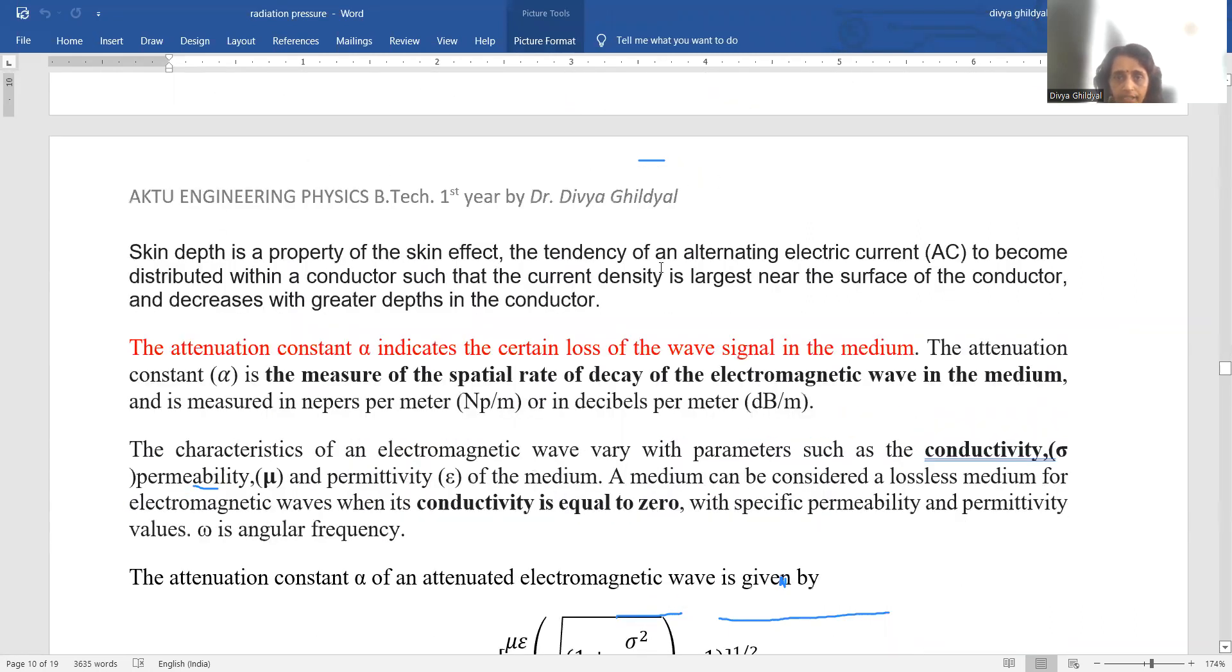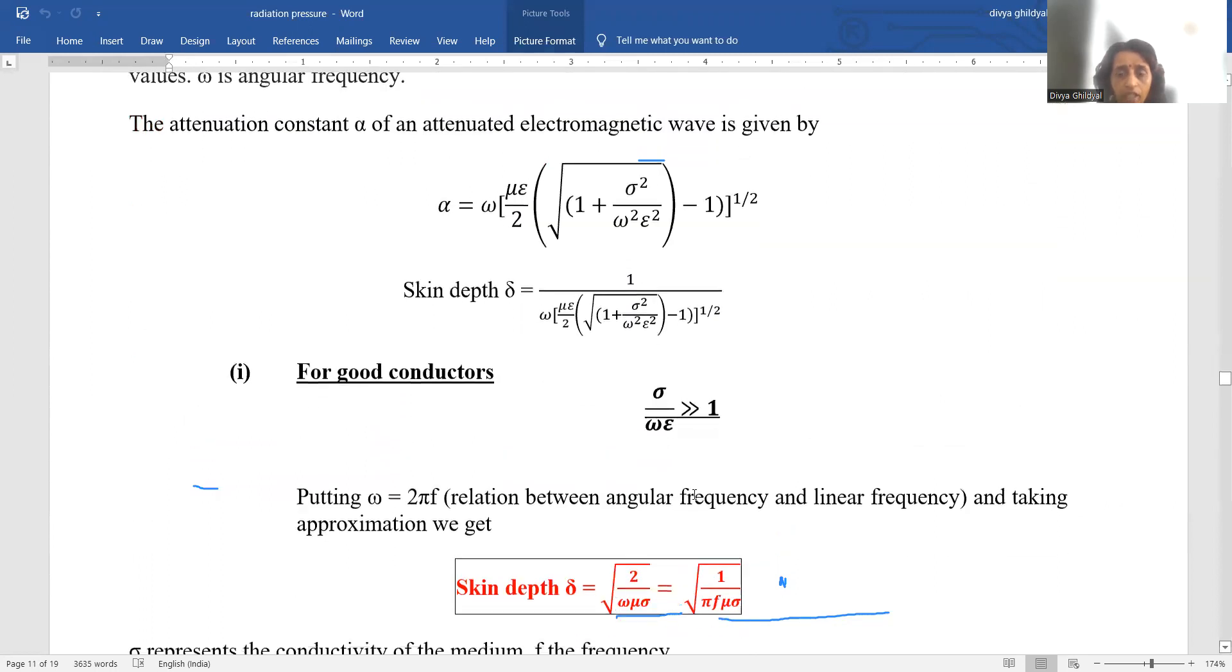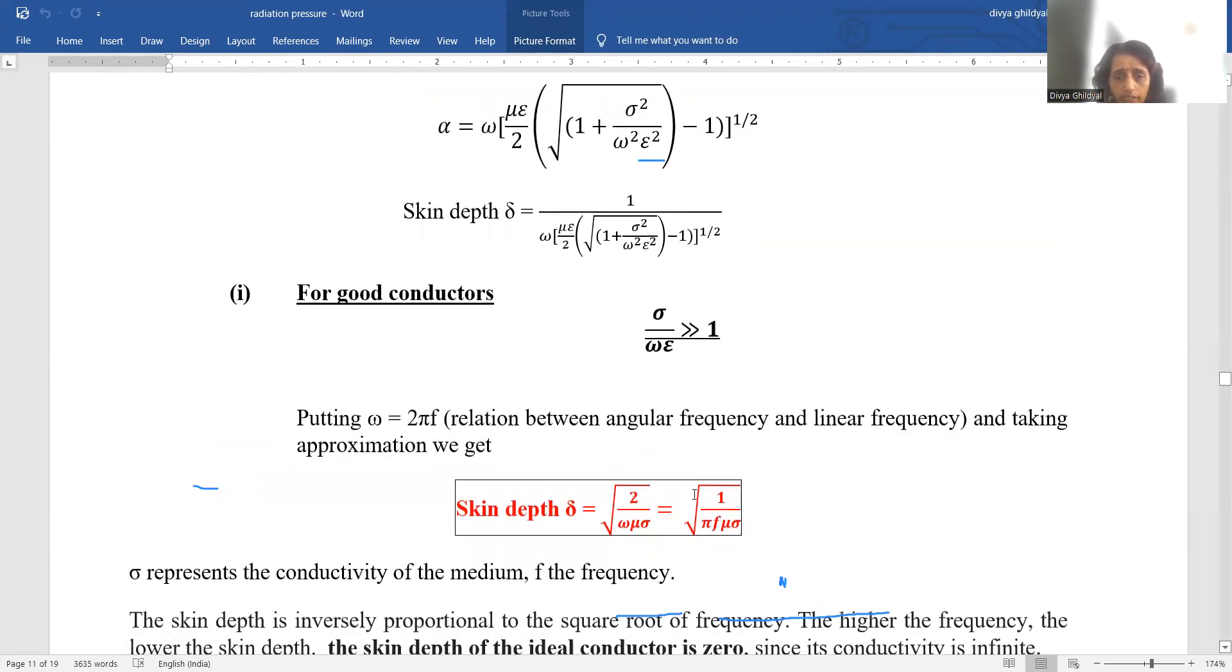So skin depth, the tendency of an alternating electric current to become distributed with a conductor such that the current density is largest near the surface of conductor. Attenuation constant indicates the certain loss of wave signal in the medium. Skin depth for good conductors is given by del equal to under root 2 upon omega mu sigma where this sigma represents the conductivity of the medium.